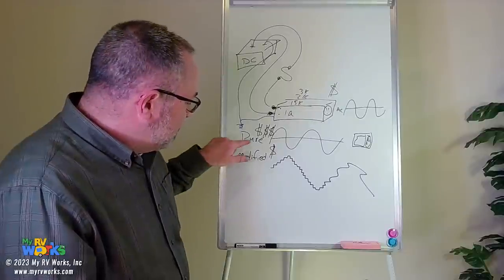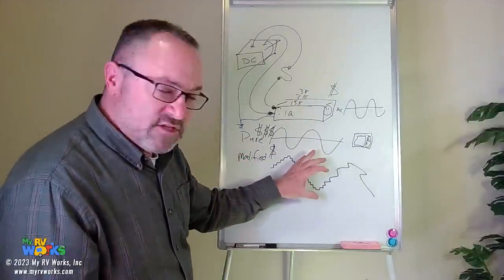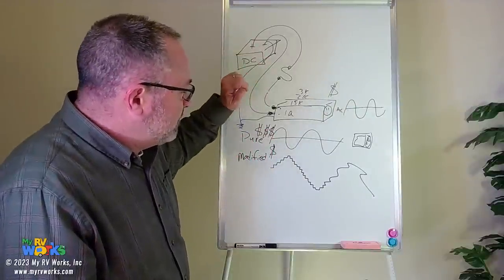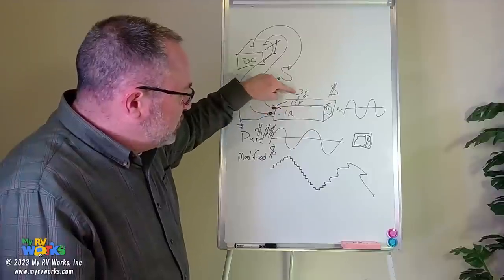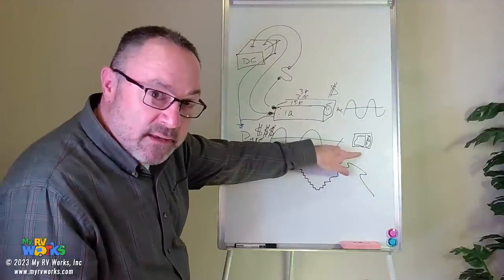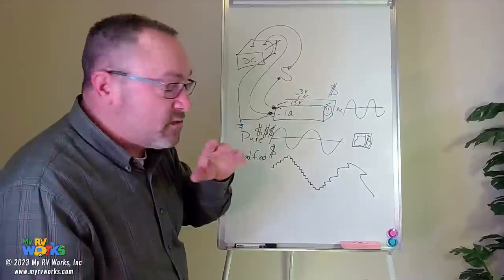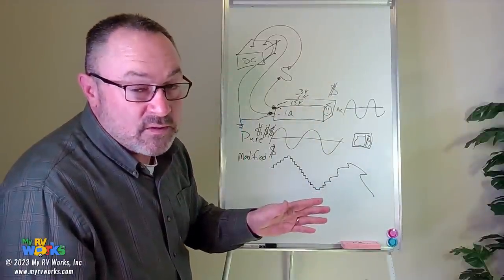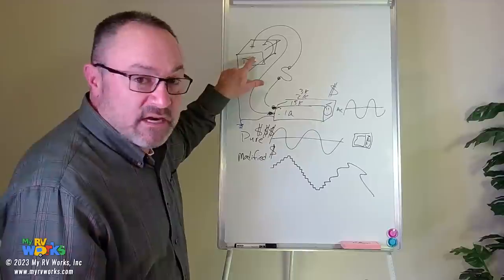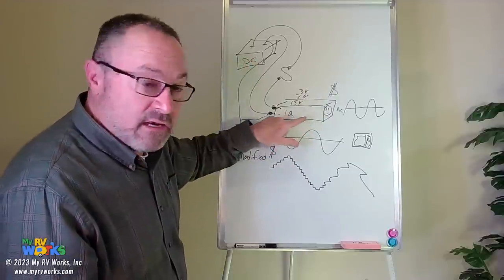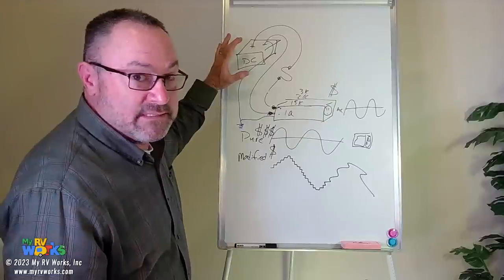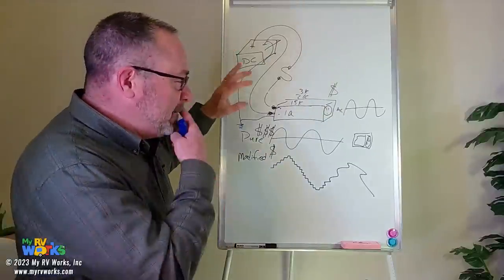Know the difference between pure and modified sine wave — pure will be more expensive. Reference your manual, keep them cool, and size the inverter based on what you'll run at any given time. You're not overwhelmingly going to use your inverter to run your air conditioner — it will drain the battery so fast. It can technically do it, but you'd need a massive battery bank to run the AC for more than 10 minutes.